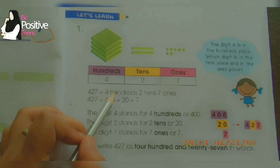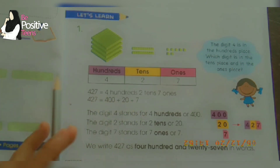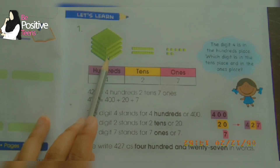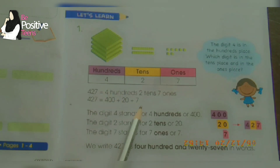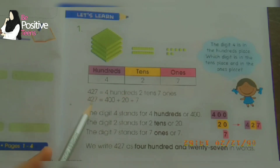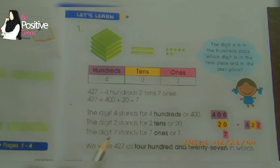This is the place value in numerals and this is the place value in words. We have further elaborated 427 as four hundred plus twenty plus seven. As I told you about the crayons — there were four hundred boxes of crayons, twenty tens boxes of crayons, and seven single crayons. So when we join them: four hundred plus twenty plus seven. The digit four stands for four hundred, the digit two stands for two tens, and the digit seven stands for seven ones.